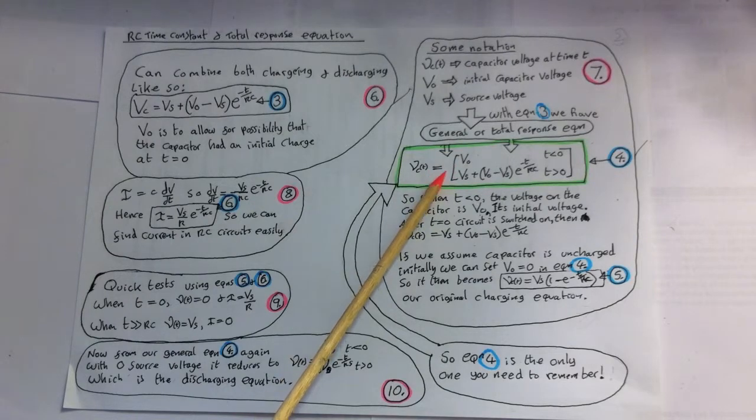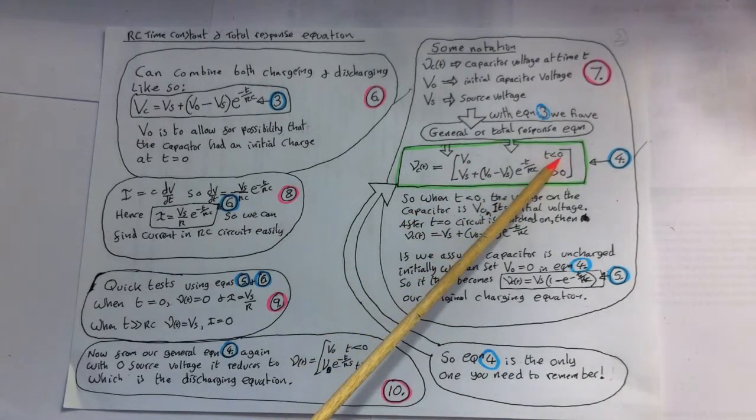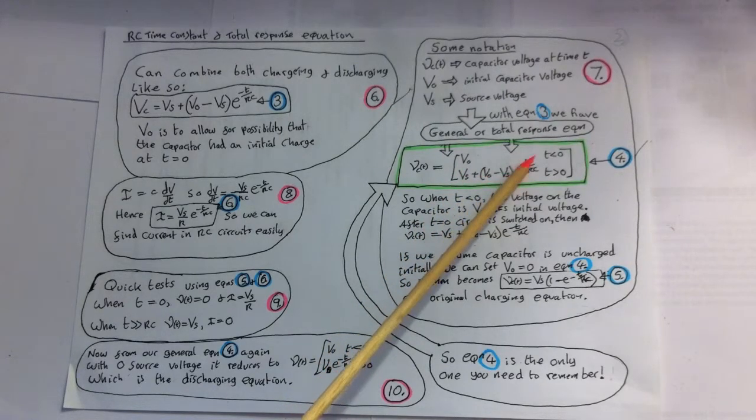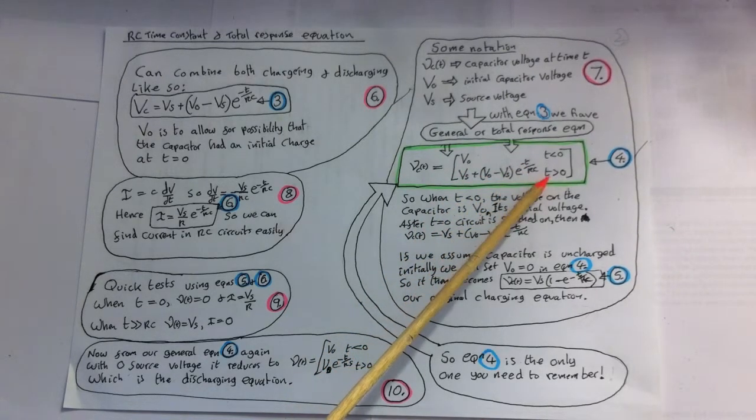We can write VCT equals, and we put this in brackets, V0 for T smaller than 0, and Vs add V0 minus Vs, e to the minus T over RC for T greater than 0.